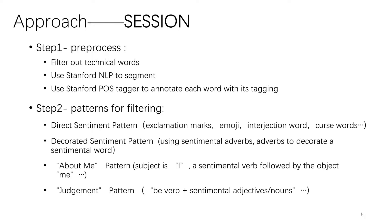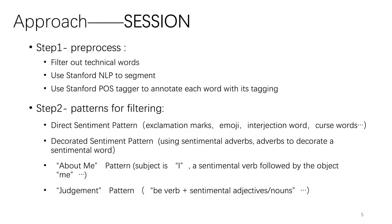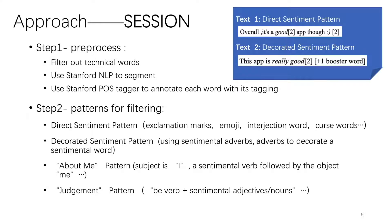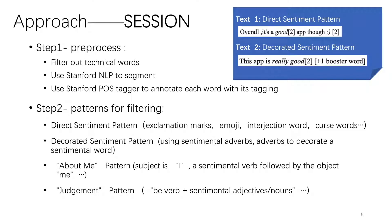Step 2: Patterns for filtering. To distinguish whether the author is expressing sentiments, we proposed filter rules. Only the sentence that matches at least one defined pattern will be considered as likely to express sentiments. In this step, we define four patterns: Direct sentiment pattern, Decorated sentiment pattern, About me pattern, and Judgement pattern. We will use two texts from the previous sample for demonstration. Text 1 uses an emoji to express positive sentiments, and it matches the direct sentiment pattern. Text 2 uses 'really' to decorate the word 'good', emphasizing the degree of 'good', and matches the decorated sentiment pattern.